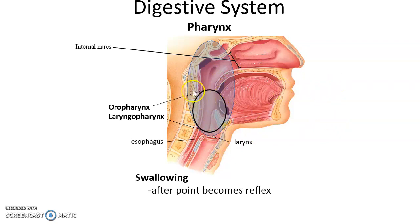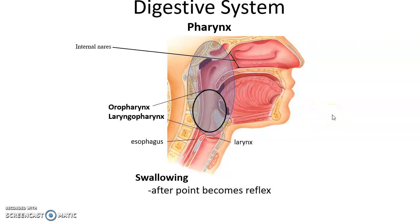In the digestive system, we only use the oropharynx and the laryngopharynx. As the bolus gets pushed into the pharynx, we begin swallowing — moving the bolus from the oral cavity to the esophagus. Once you move the bolus far enough into the pharynx, swallowing becomes automatic, a reflex that you cannot stop.